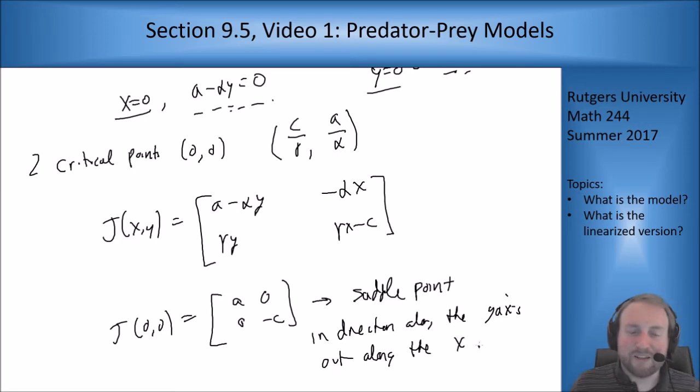This is a saddle point with the in direction along the y-axis and out along the x. And this makes sense because if we're at the origin and we have a couple of predators but no prey we're going to come into the origin because the predators can't eat anything and they're going to die off. Similarly if we are near the origin but we're on the x-axis which means we have prey but no predators then the prey is just going to take off and grow. So the out direction is along the x-axis, the in direction along the y, and in the middle we have our saddle point curves.